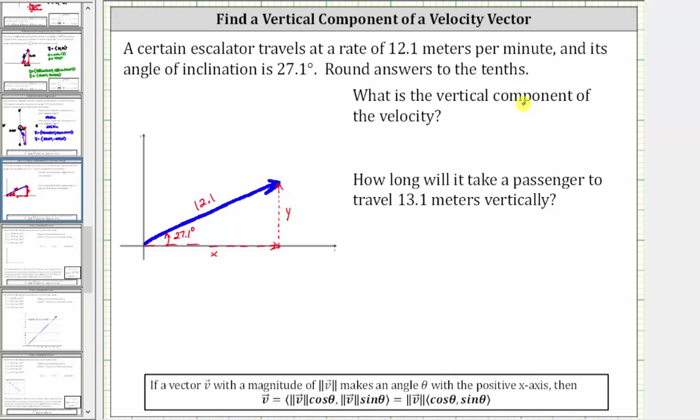To answer our question, we need to find the vertical component, but we'll go ahead and find both components and explain the meaning of both. Notice how by sketching the horizontal and vertical components, we now have a right triangle that we can use to solve for x and y.